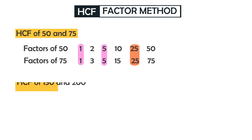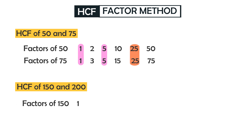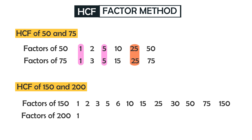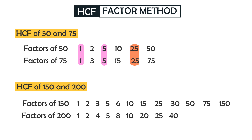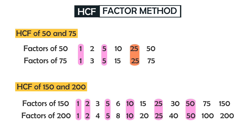Now let's find HCF of 150 and 200 using the factor method. The factors of 150 are 1, 2, 3, 5, 6, 10, 15, 25, 30, 50, 75, and 150. The factors of 200 are 1, 2, 4, 5, 8, 10, 20, 25, 40, 50, 100, and 200. The common factors of 150 and 200 are 1, 2, 5, 10, 25, and 50. Among them, 50 is the largest. So the highest common factor of 150 and 200 is 50.